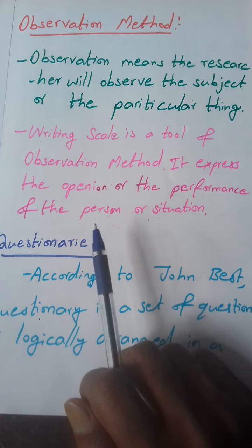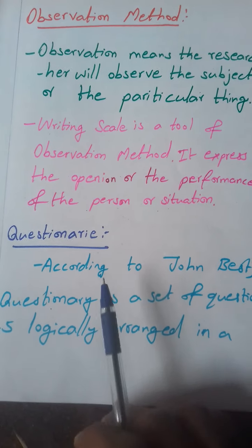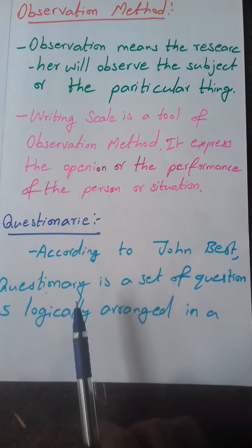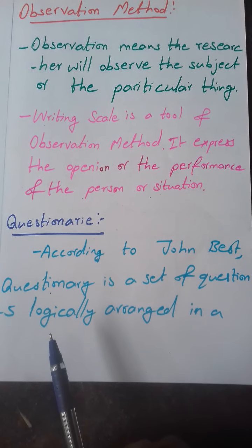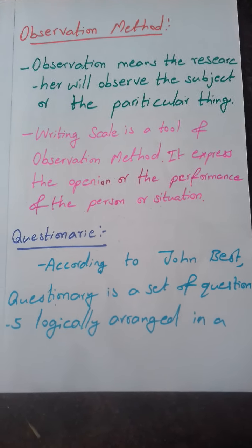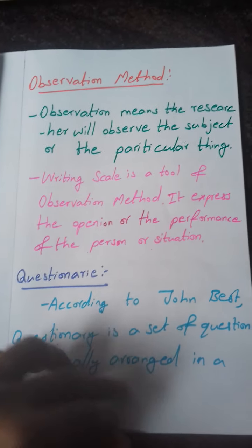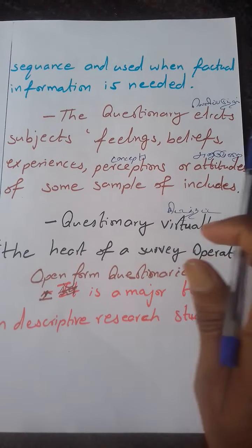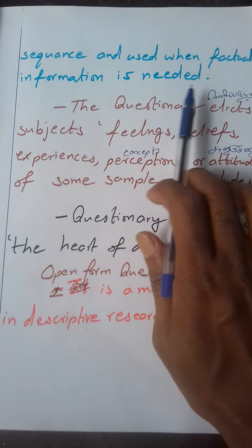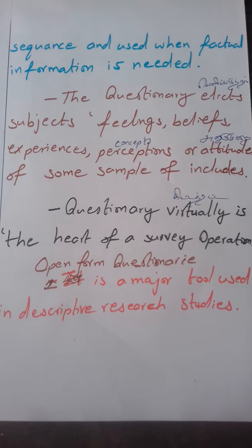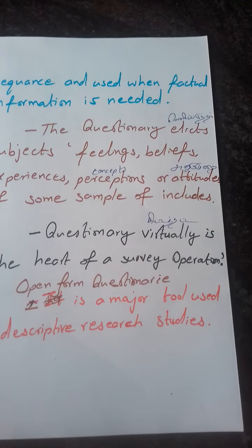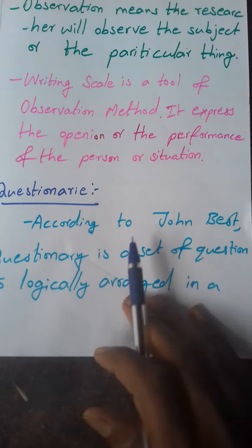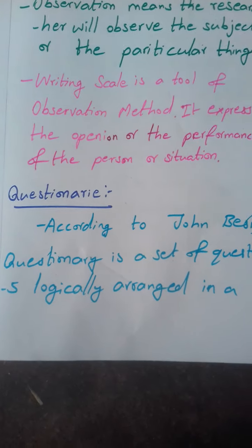The next method is the Questionnaire. According to John Best, a questionnaire is a set of questions logically arranged in a sequence, and used when factual information is needed.